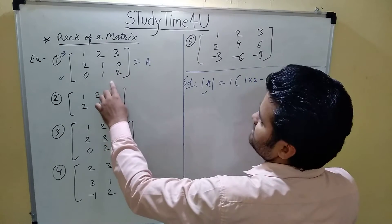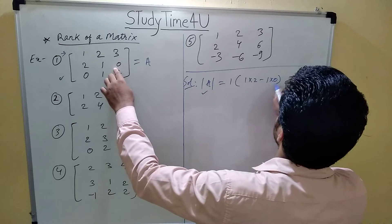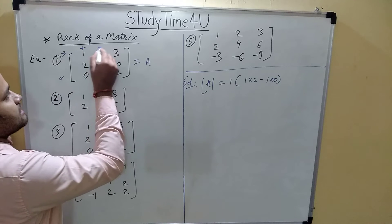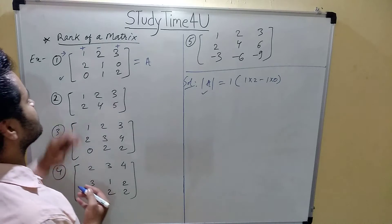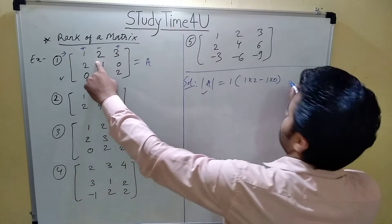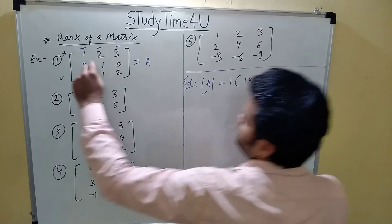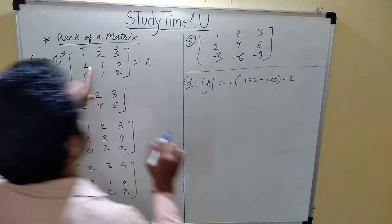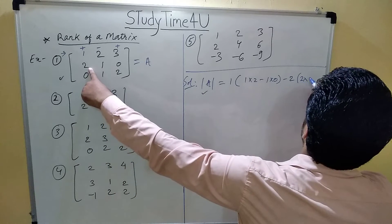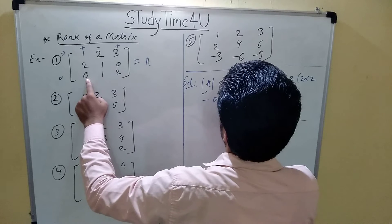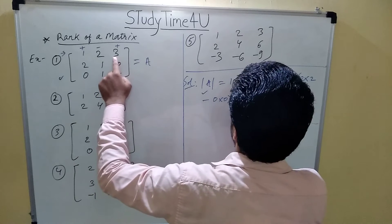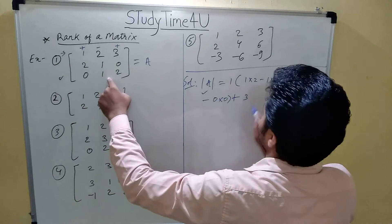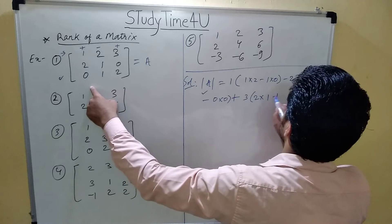So 1 multiplied by (2 minus 1 into 0). This element is considered with a plus sign, the next with minus, and the last with plus. So we shift to the next value: minus 2, leaving the second column and first row, getting 2 and 2. It will be 2 into 2 minus 0 into 0. Then the last value with plus sign: 3, and 2 multiply by 1 plus 0 into 1.